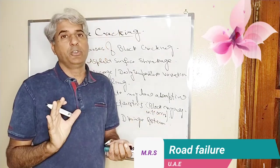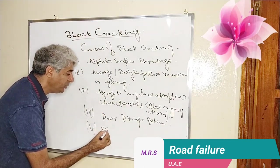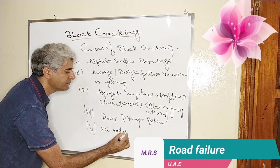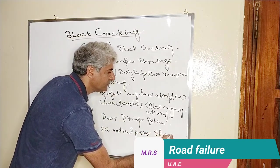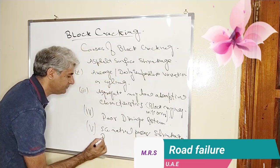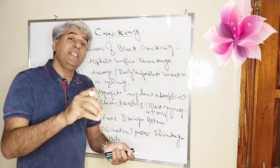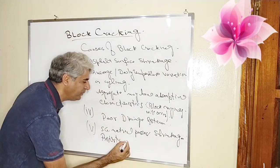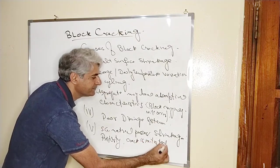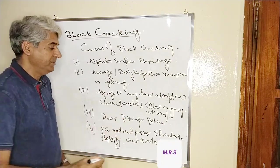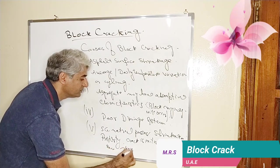After poor drainage system, consider the foundation of the road structure — the subgrade material. Your subgrade material may possess shrinkage properties. Keep this in mind: when your subgrade material possesses shrinkage properties, due to this, a crack is initiated and then it is shown on the surface.